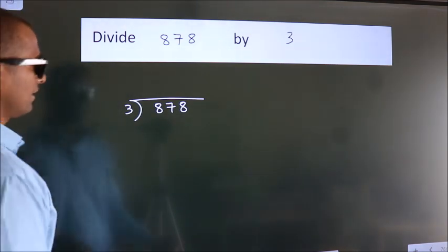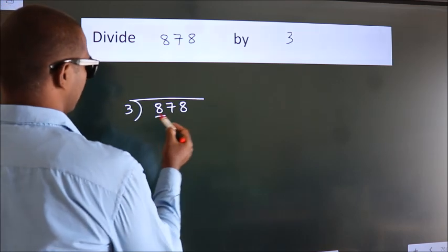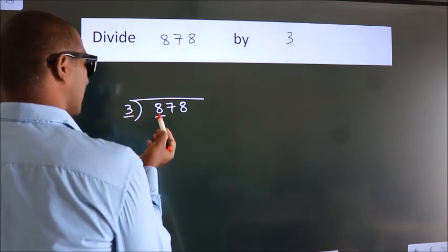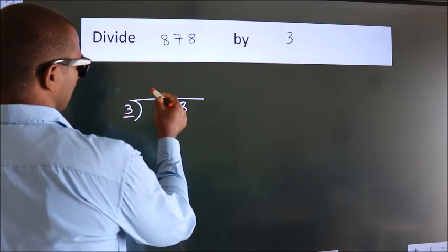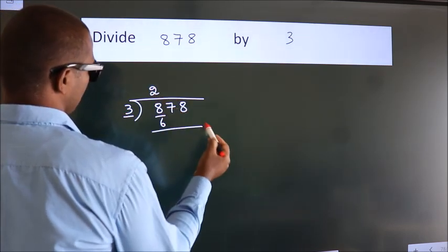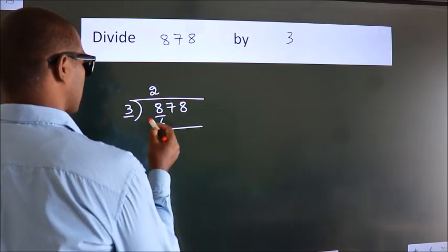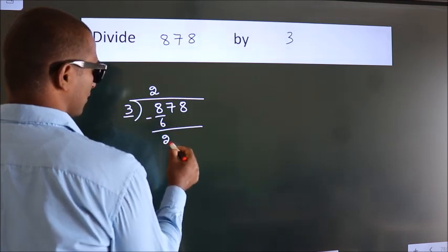Next, here we have 8, here 3. A number close to 8 in the 3 table is 3 times 2, which is 6. Now we should subtract. We get 2.